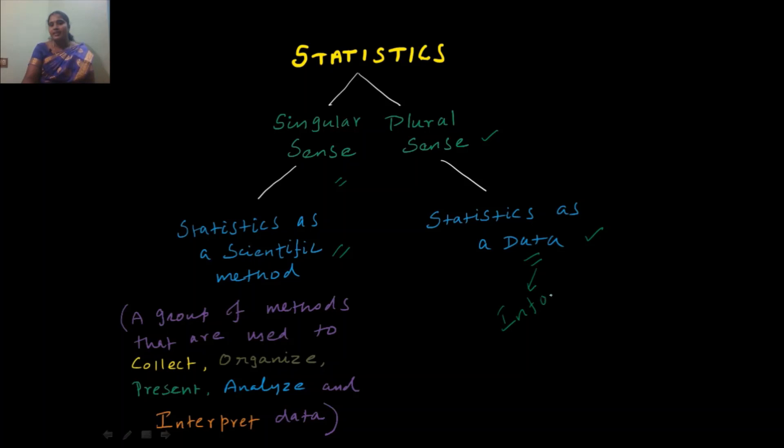In my next video, I will explain data and its type in detail. But now, you just remember that data means information. That is, any information collected for any definite purpose under investigation is known as data. So statistic in the plural sense means statistic as data, commonly known as statistical data.